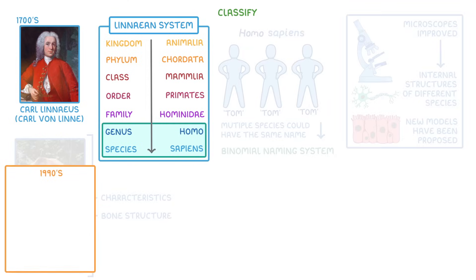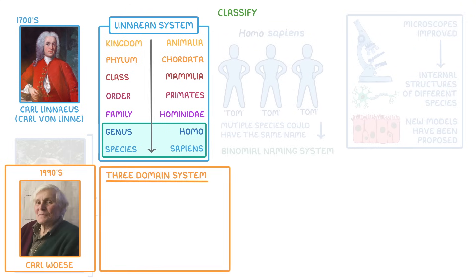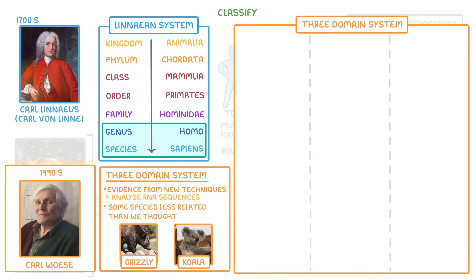For example, in the 1990s, a different Carl — this time Carl Woese — proposed the three-domain system. Using evidence gathered from new techniques that could analyze RNA sequences, he found that some species were less related than we thought. And so he introduced three new categories, called domains, that were placed above kingdoms.